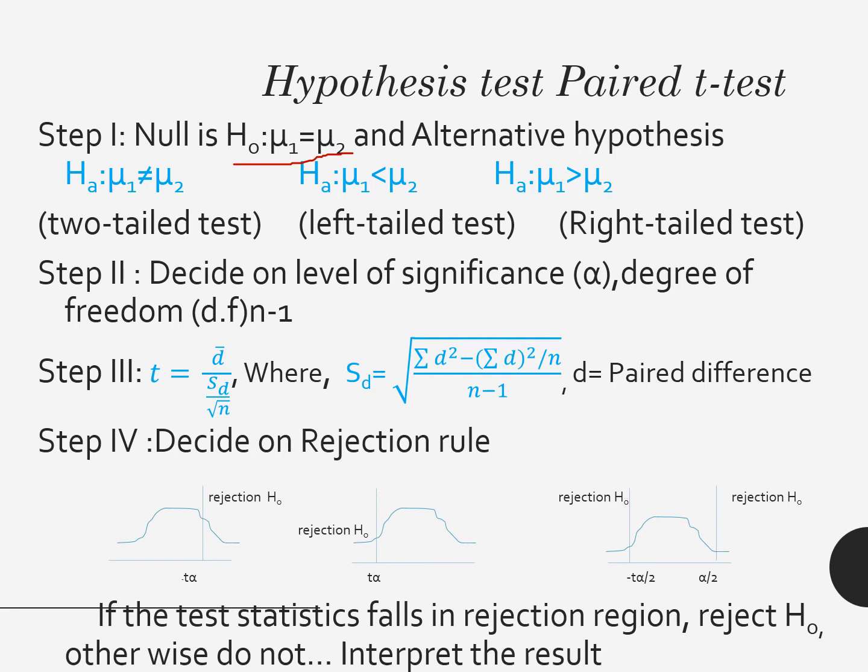Then we will decide on level of significance α, and degree of freedom will be used. In step 3, the test statistics is different. Here you can see d̄ is used. It means the differences we are going to find for population 1 from population 2. We are going to find the mean of that difference, then divide it with standard deviation of the pair differences divided by √n. The standard deviation formula is also given. Here d means pair differences, differences of population 1 from population 2.